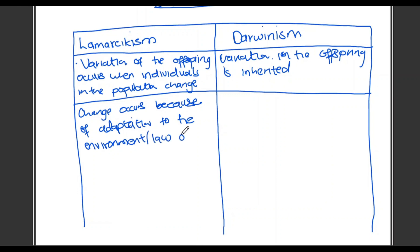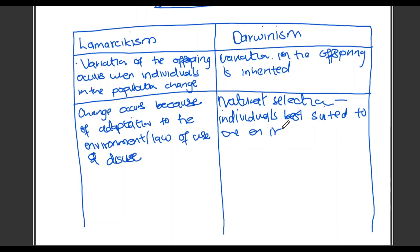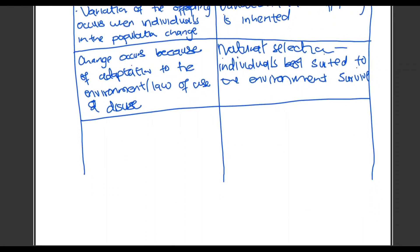For Darwin's side of the second point, there is basically natural selection. Natural selection says that individuals best suited to the environment survive. Done with the second point.